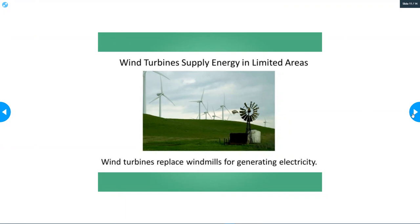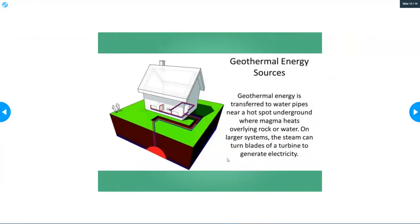Geothermal energy is transferred to water pipes near a hot spot underground where magma heats overlying rock and water. On larger systems, the steam can turn blades of a turbine to generate electricity.